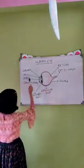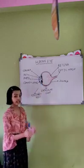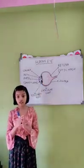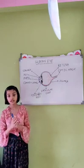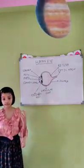Iris. The first part is iris. Iris expands and contracts to control the amount of light that comes to the pupil.